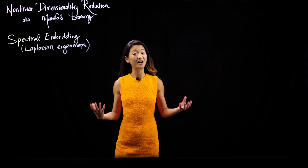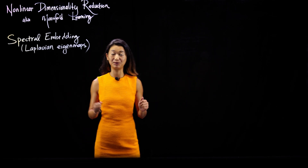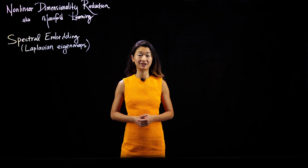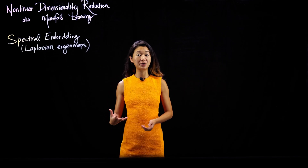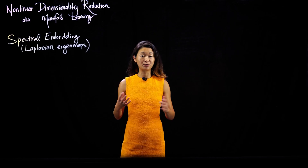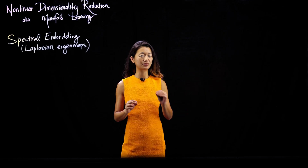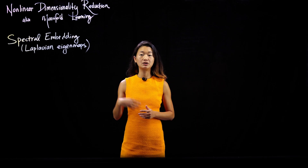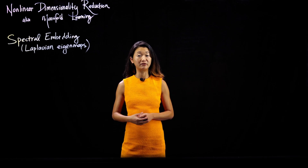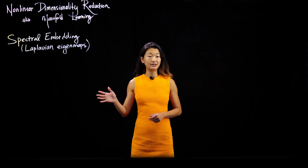We talked through, at least in concept, all the decisions that one has to make in order to learn a manifold or do this non-linear dimensionality reduction. Now let's actually go through a concrete example of a popular algorithm that has been proven to work over many different data sets and also has some really interesting concrete mathematical connections to linear dimensionality reduction like PCA and SVD that we're much more familiar with. So we're going to be going through something that's called spectral embedding.